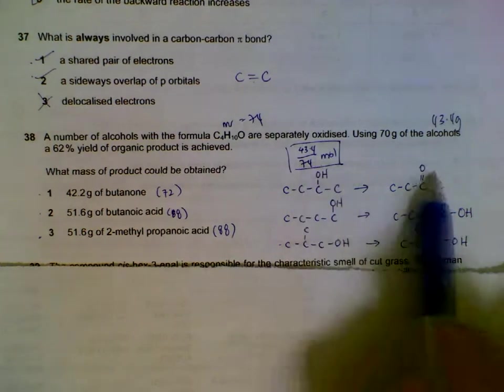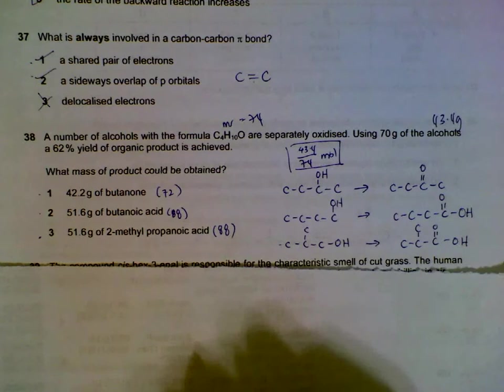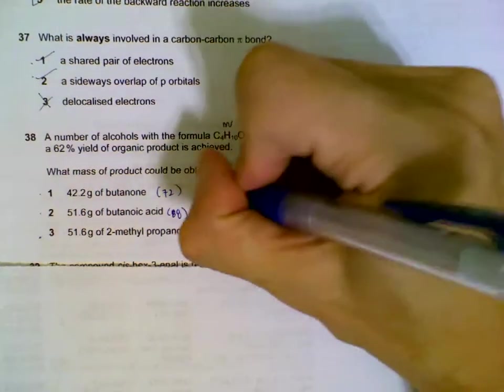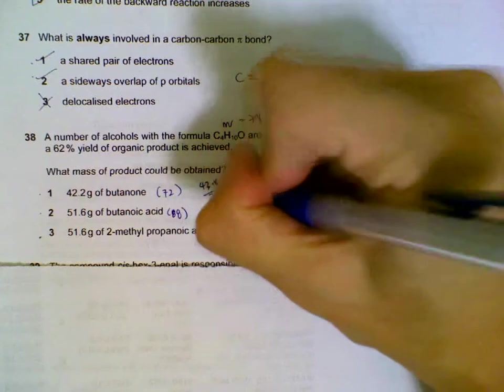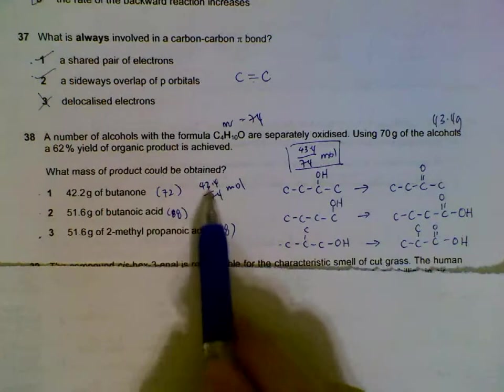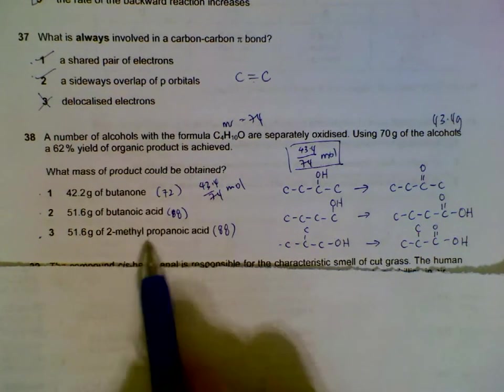By ratio, we will get the same moles of the products. 43.4 over 74—I'll leave it as a fraction, it will be more exact. So we will have 43.4 divided by 74 moles of butanone, butanoic acid, and methyl propanoic acid.